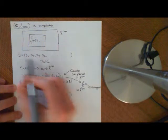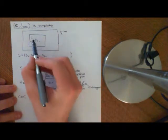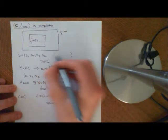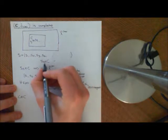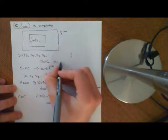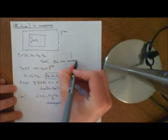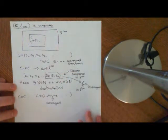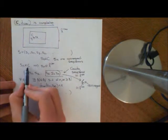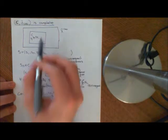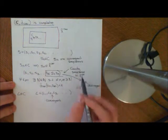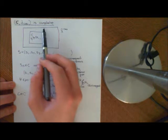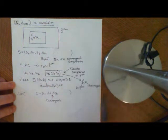We take some sequence S, which is a Cauchy sequence of sequences within the metric space C. So all S_N are convergent sequences. Since S_N is an element of C, we can consider S_N as an element of L-infinity. If it's Cauchy within C, it's also Cauchy within L-infinity, because C with this metric is just a subset of L-infinity with the d-infinity metric.